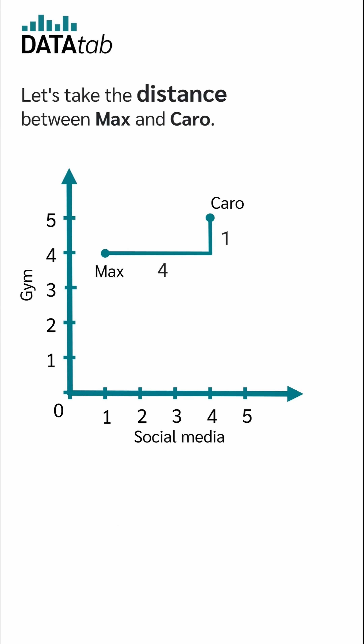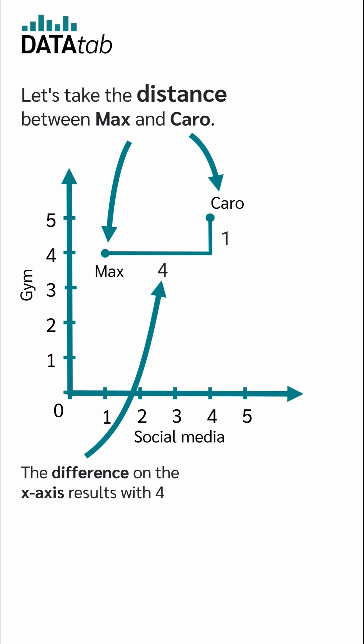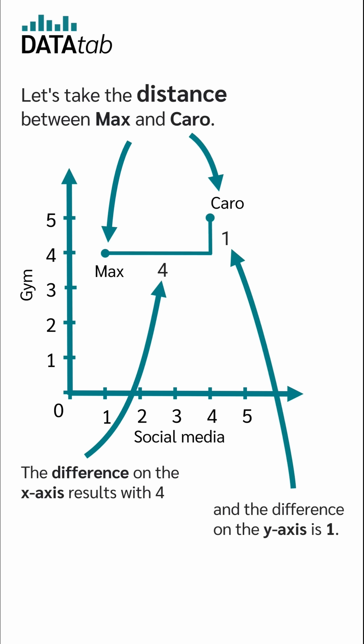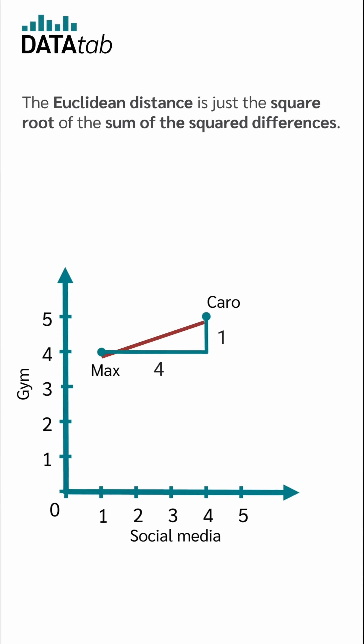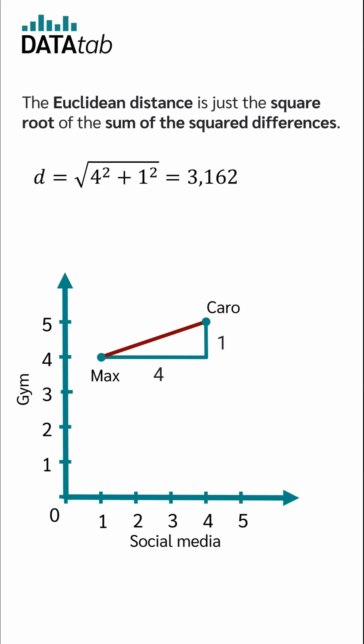Let's take the distance between Max and Caro. The difference on the x-axis is 4 and the difference on the y-axis is 1. The Euclidean distance is the square root of the sum of the squared differences, calculated as the square root of 4 squared plus 1 squared, which is 3.162.